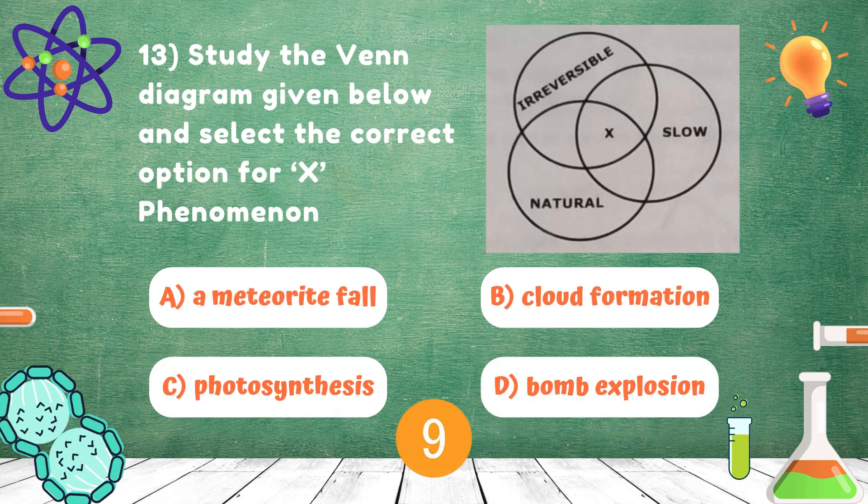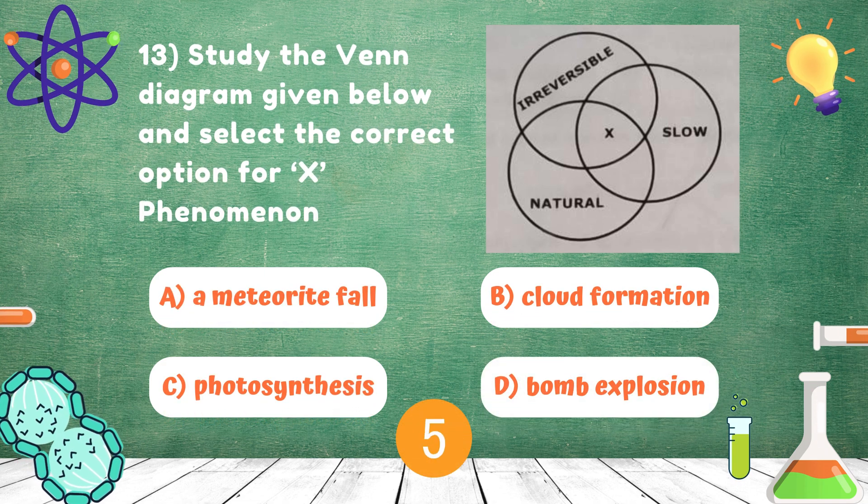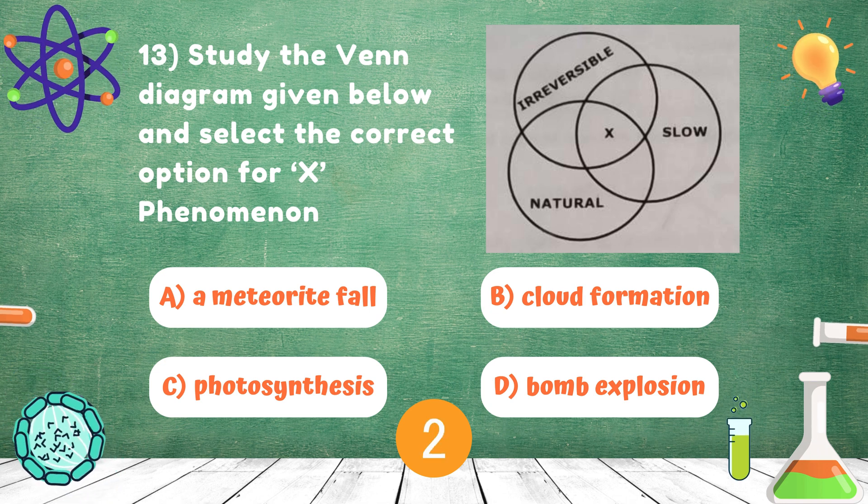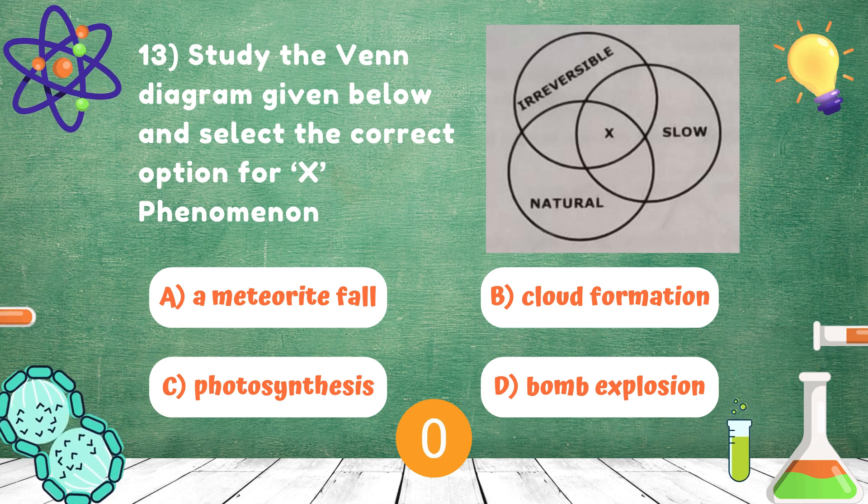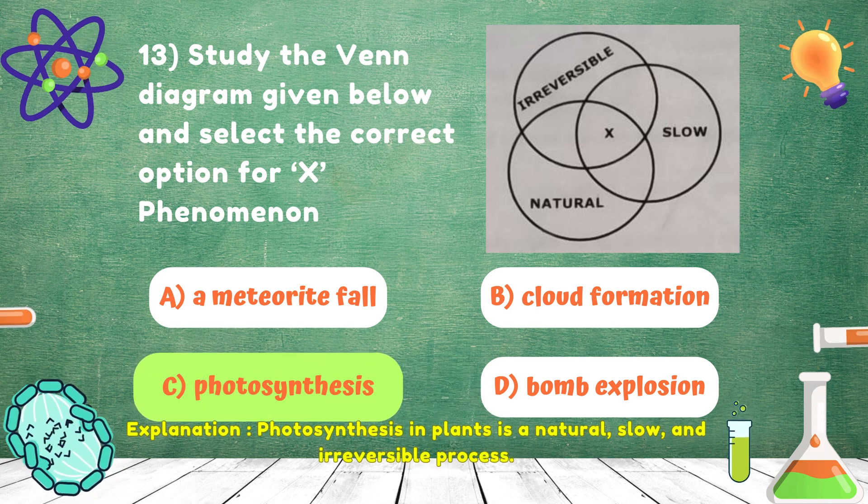Study the Venn diagram given below and select the correct option for X-Phenomenon. Answer is Photosynthesis.